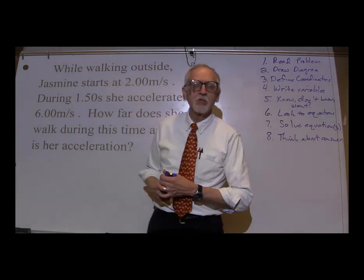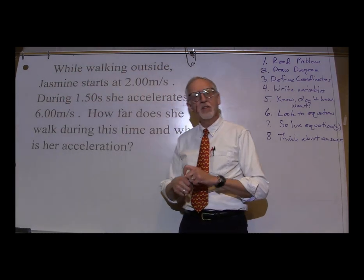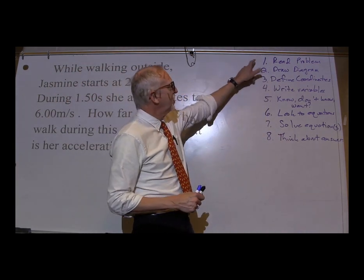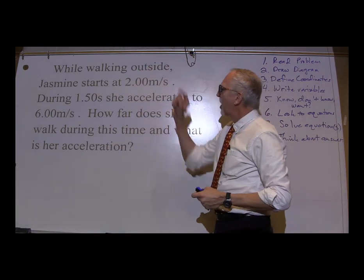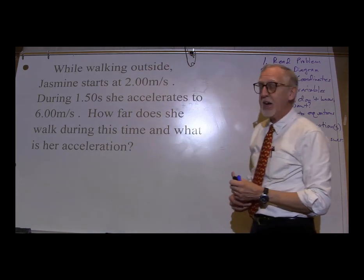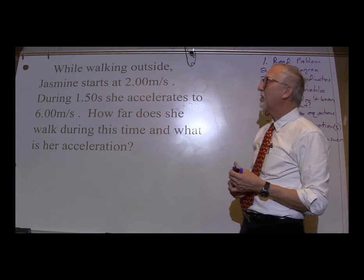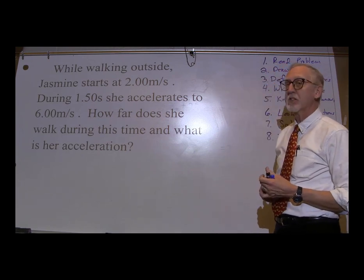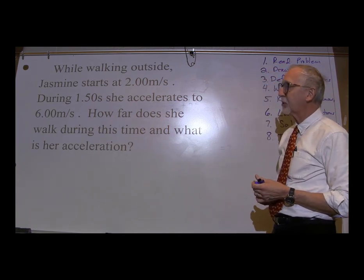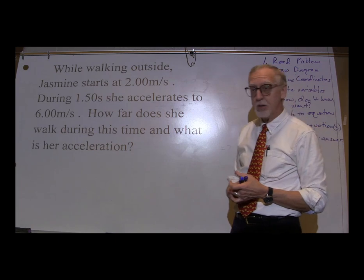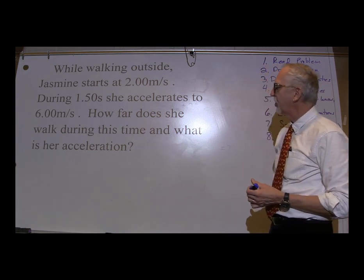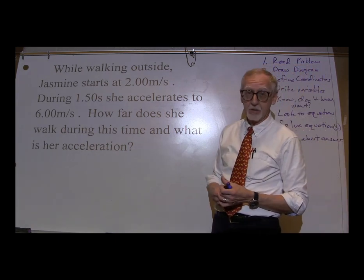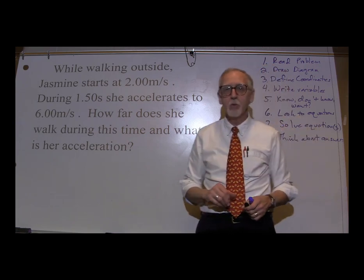Here's another problem. Let's try and solve this the same way we did the last one. What do we do first? Read the problem. While walking outside, Jasmine starts at 2.00 meters per second. During 1.50 seconds, she accelerates to 6.00 meters per second. How far does she walk during this time and what is her acceleration? We read the problem.